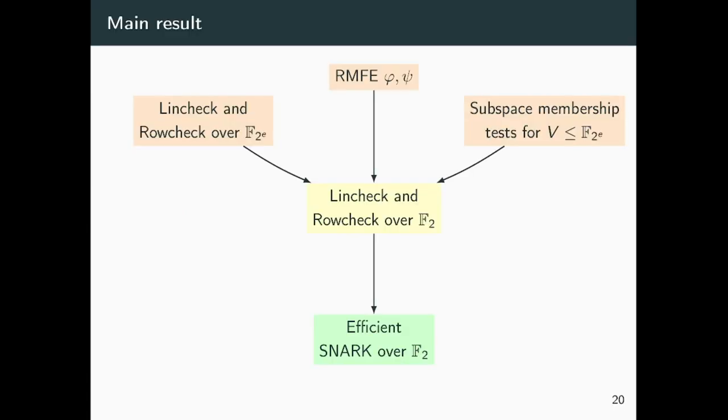In conclusion, let me summarize the main results we obtained so far. We started with a Lincheck and a Rowcheck over the large field F2^e, and a Reverse Multiplication-Friendly Embedding φ and ψ. Thanks to this tool, we translated linear and quadratic equations over F2 into equations over the larger field, albeit modulo a subvector space V. For this reason, we provided a subspace membership test for any subvector space V of F2^e.